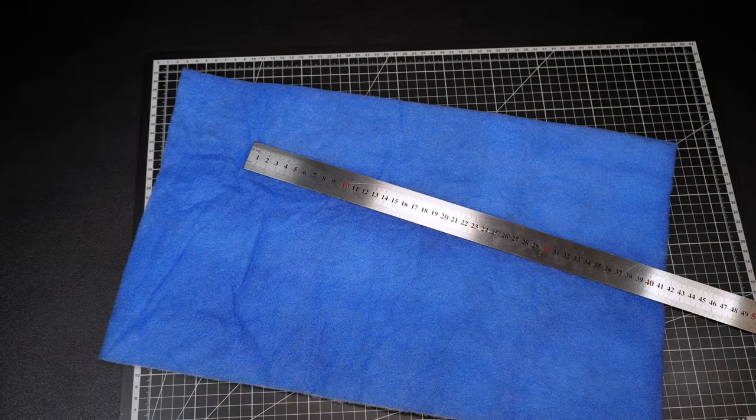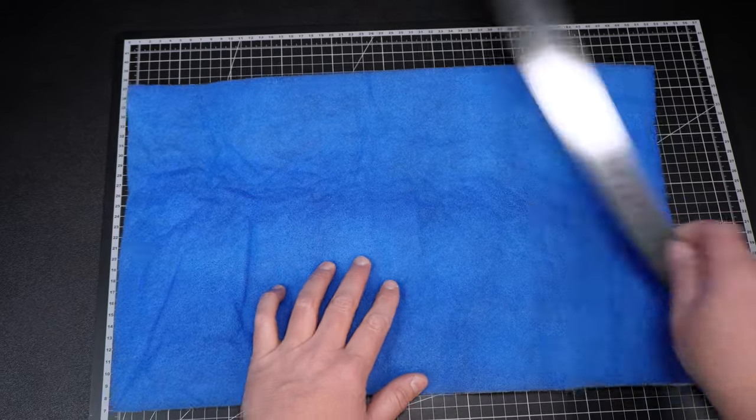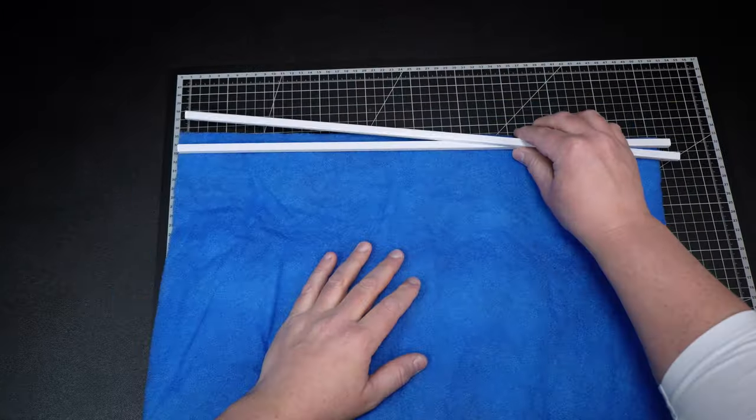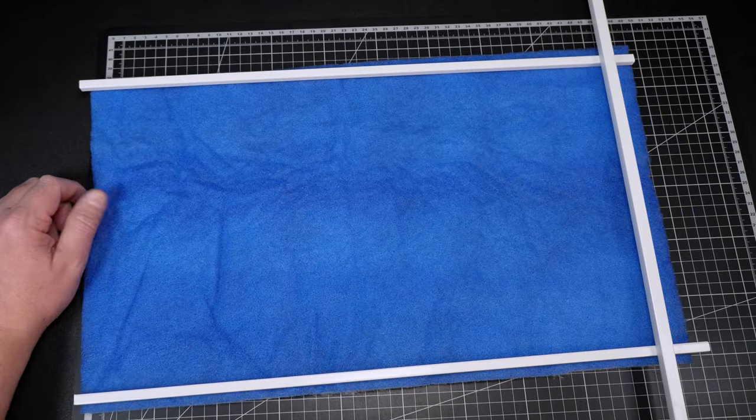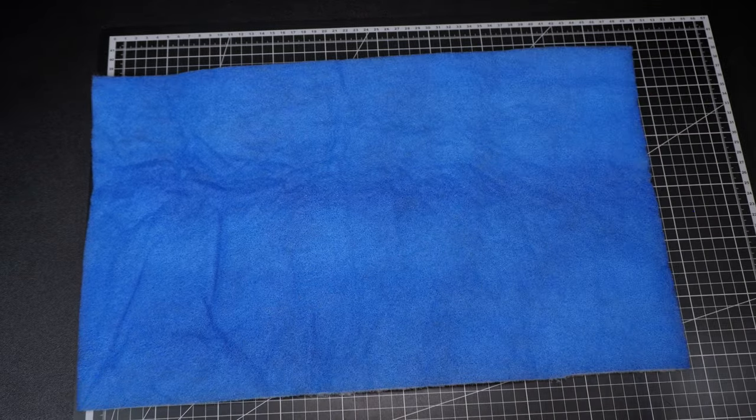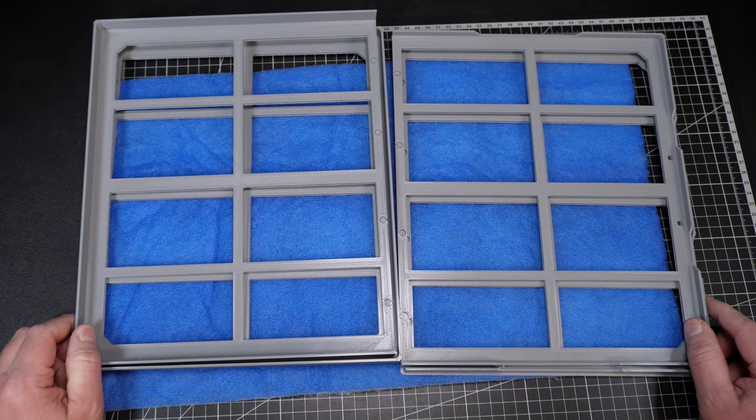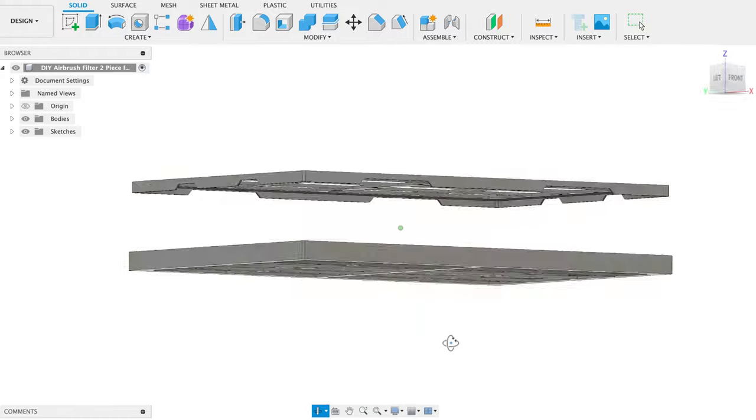And once that is done, we'll only be needing a way to hold the filter in place. If I had done this just a few years back, we might have been looking at a way to use some PVC pipes with a sort of a mesh attached to it to hold the filter in place. But luckily, these days, I believe every maker has access to a 3D printer. So of course, I turned to Fusion 360. And this is what I ended up with.